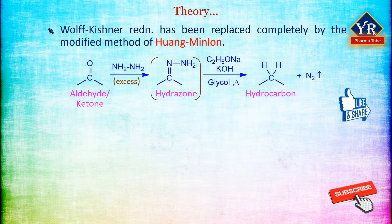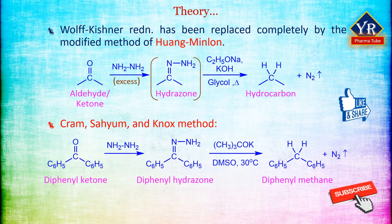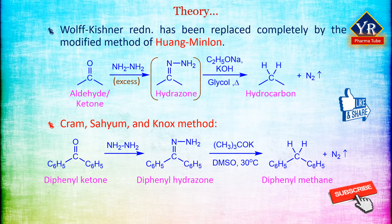In the Huang Minlon modification, an alkali hydroxide such as sodium hydroxide or potassium hydroxide is used for several hours under reflux. The water formed eliminates and the temperature rises to 200 degrees centigrade when the hydrazone decomposes with the formation of a hydrocarbon and evolution of nitrogen. In a further and newer modification known as the Cram, Sahium and Nox method, the reduction can be carried out at room temperature using potassium tertiary butoxide as base and dimethyl sulfoxide as solvent. The yield is excellent — for example, benzophenone gives about 90% of diphenylmethane.